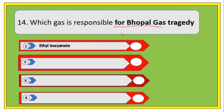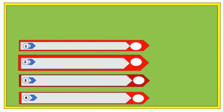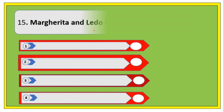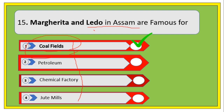Next question: which gas is responsible for the Bhopal gas tragedy? The right answer is methyl isocyanate. Next question: Margherita and Ledo in Assam are famous for — options are coal fields, petroleum, chemical industries, and jute mills. The right answer is coal fields.